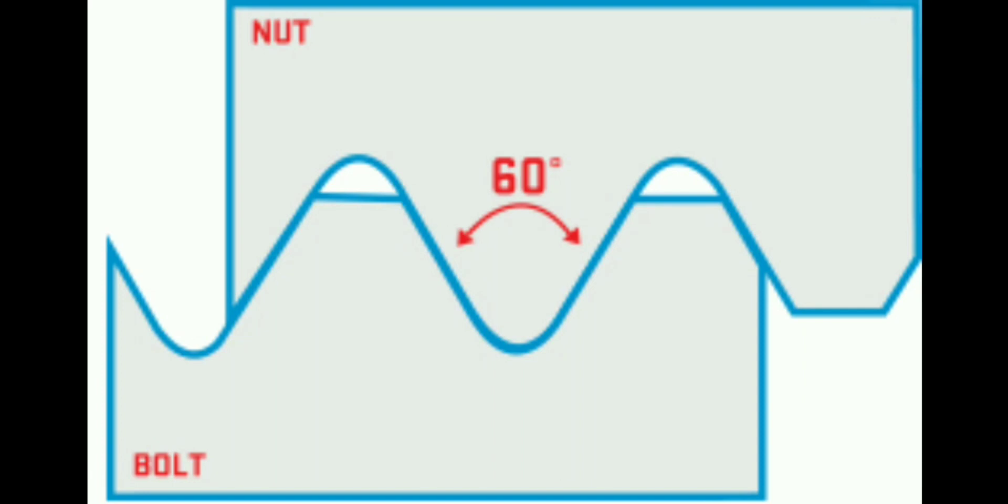Unified National Threads may experience galling or seizing during assembly if not properly lubricated or if the materials being fastened are prone to adhesion. Galling can lead to thread damage and difficulties in disassembly.